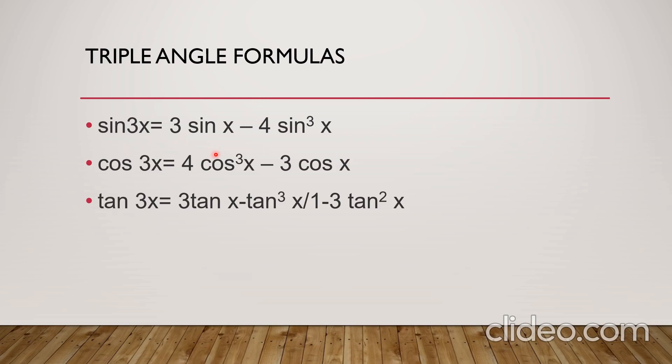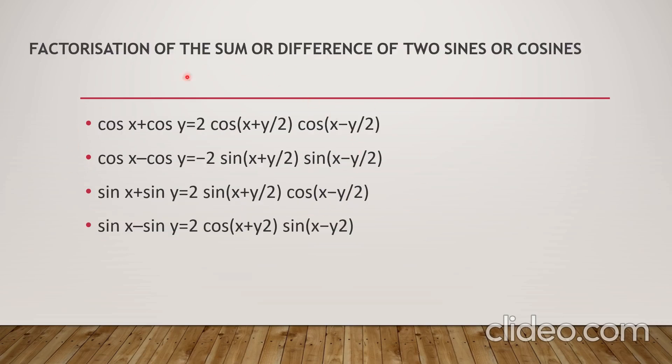Triple angle formulas: sin 3x equals 3 sin x minus 4 sin cube x. Cos 3x equals 4 cos cube x minus 3 cos x. Tan 3x equals (3 tan x minus tan cube x) upon (1 minus 3 tan square x). We call these C and D formulas, trigonometry formulas. Cos x plus cos y equals 2 cos((x+y)/2) into cos((x-y)/2). Cos x minus cos y equals 2 sin((x+y)/2) into sin((x-y)/2), or minus sin is outside. Sin x plus sin y equals 2 sin((x+y)/2) into cos((x-y)/2). Sin x minus sin y equals 2 cos((x+y)/2) into sin((x-y)/2).